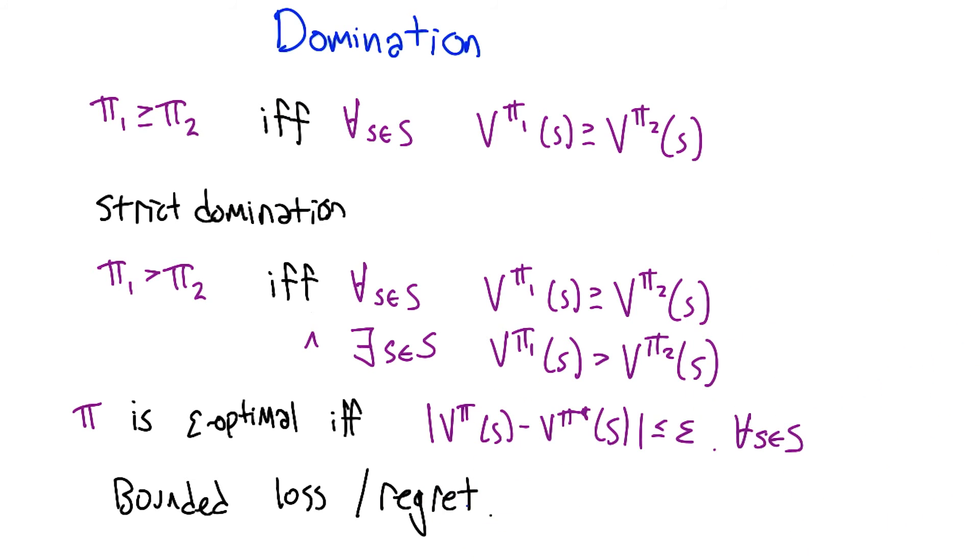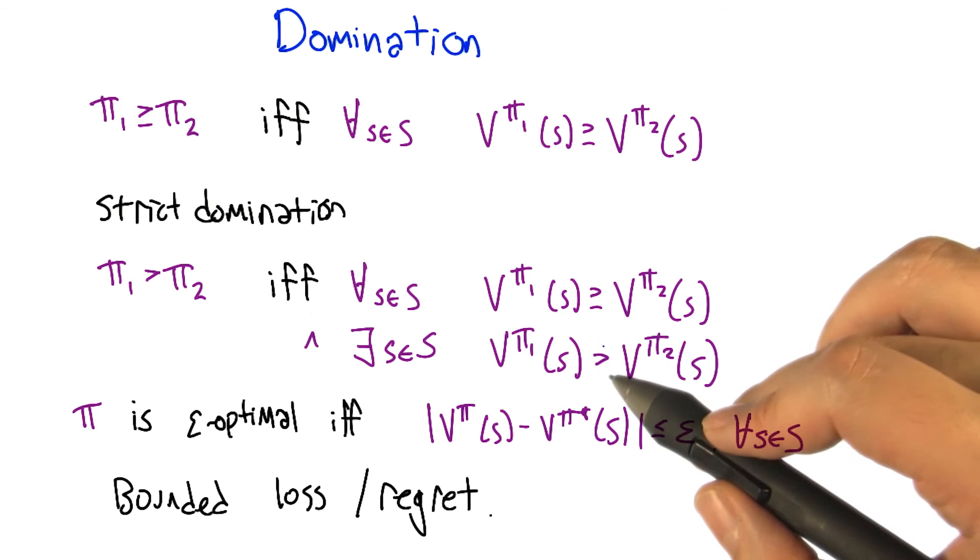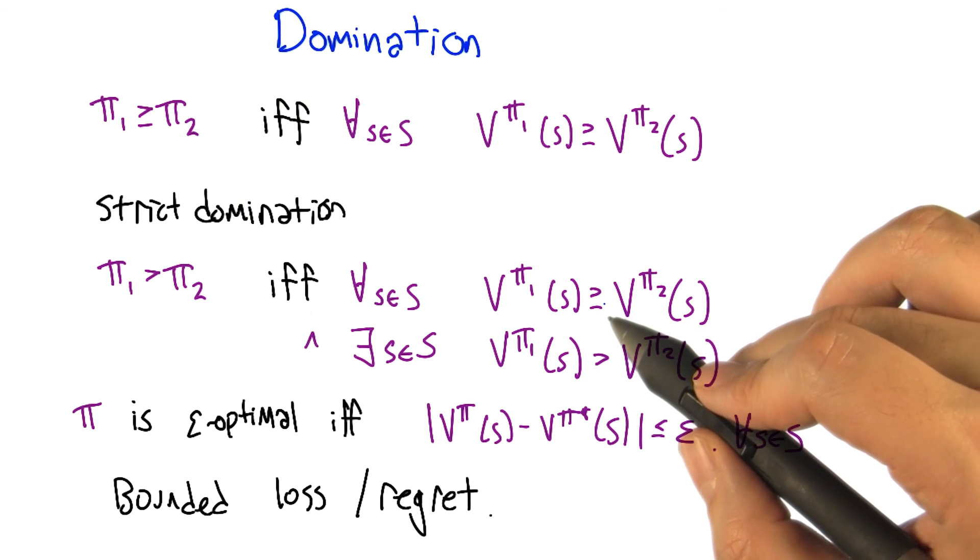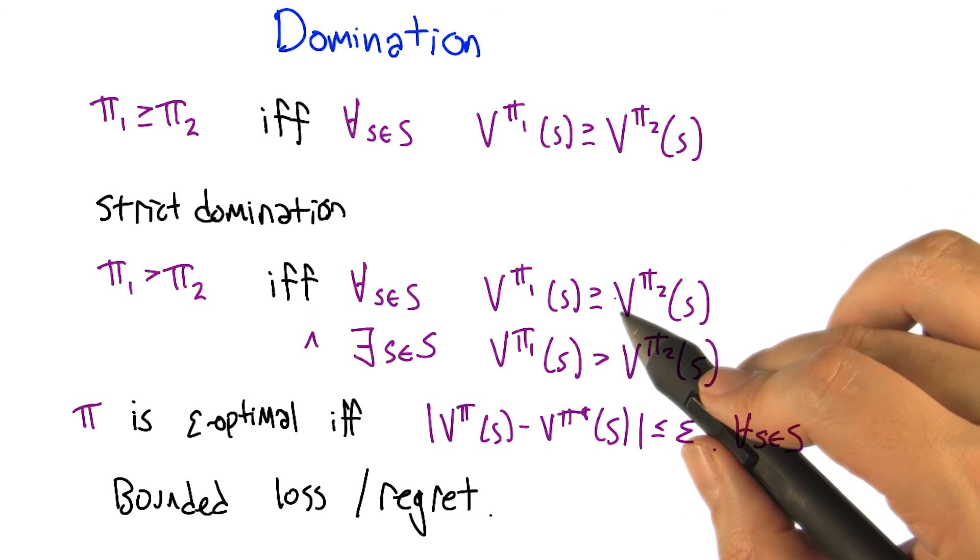So by the way, does this mean that if policy one dominates policy two but does not strictly dominate it, they must have the same value everywhere? Yeah, that's right. It would never be greater than, it would always be greater than or equal to, which means it's always equal to.